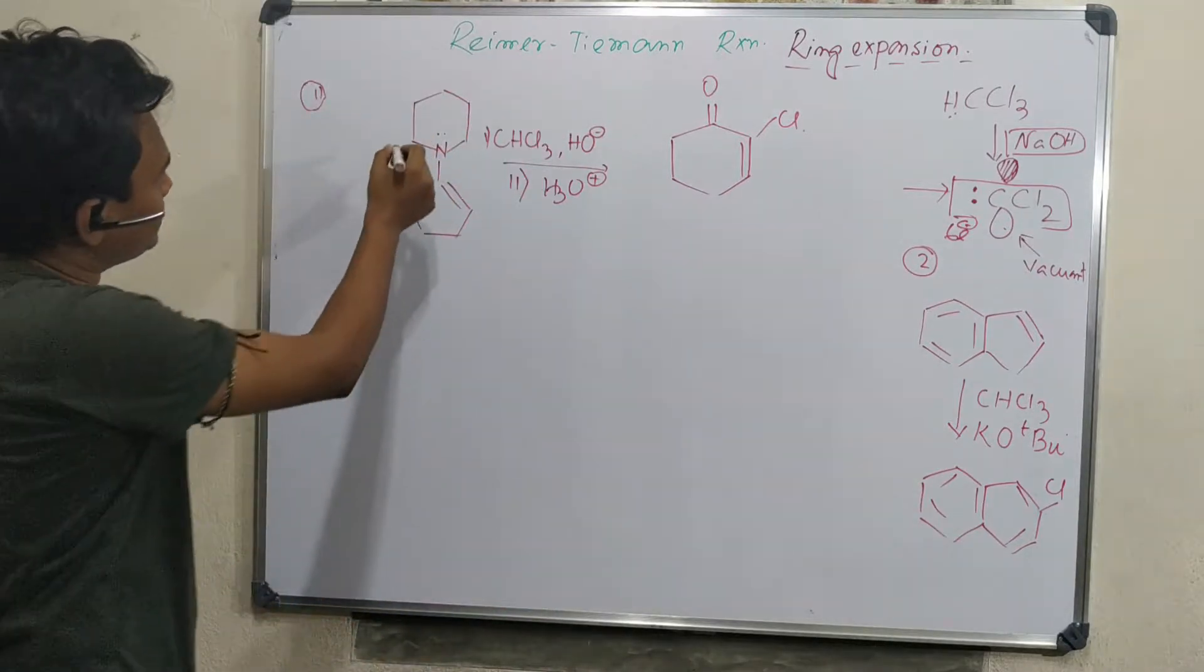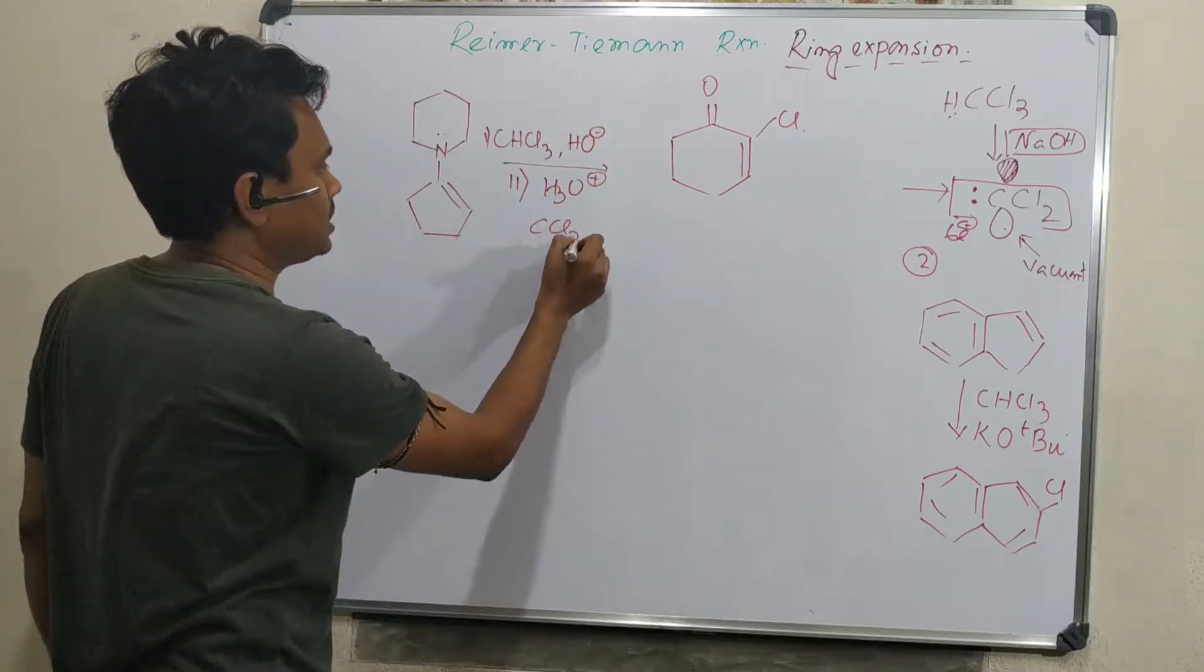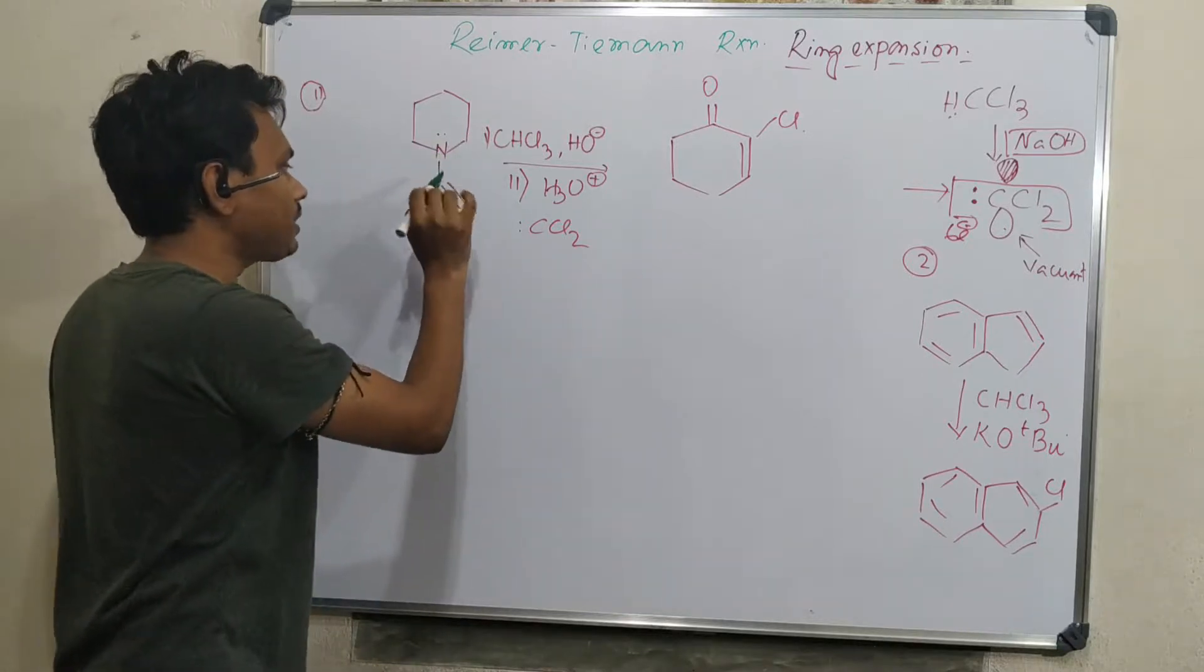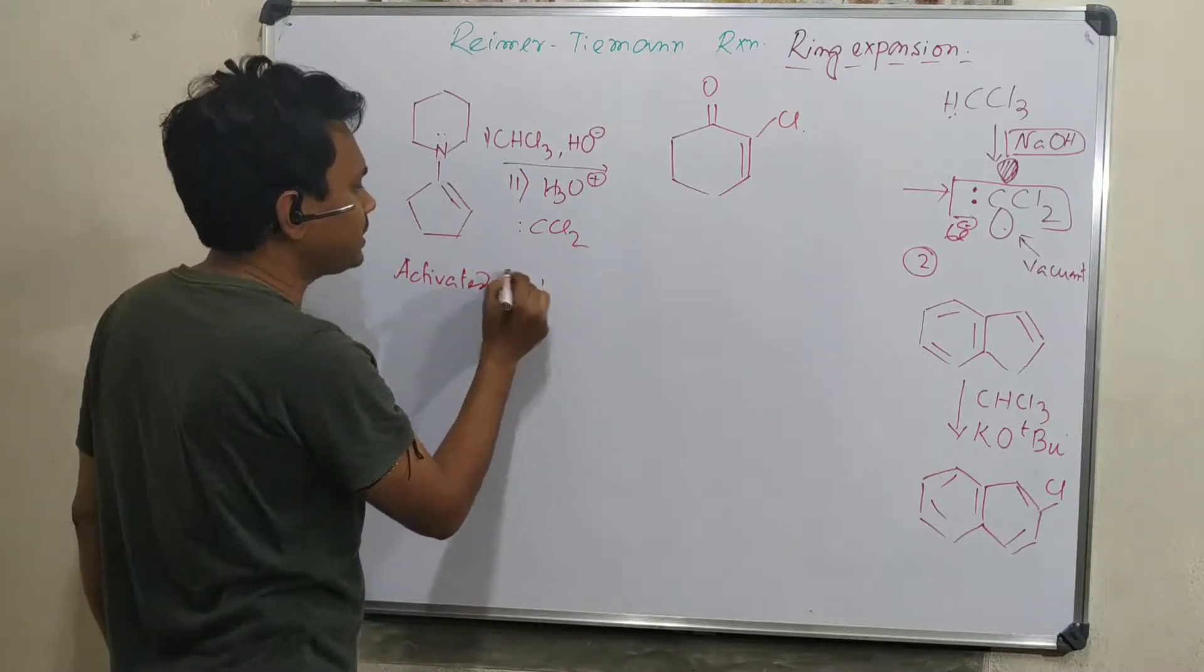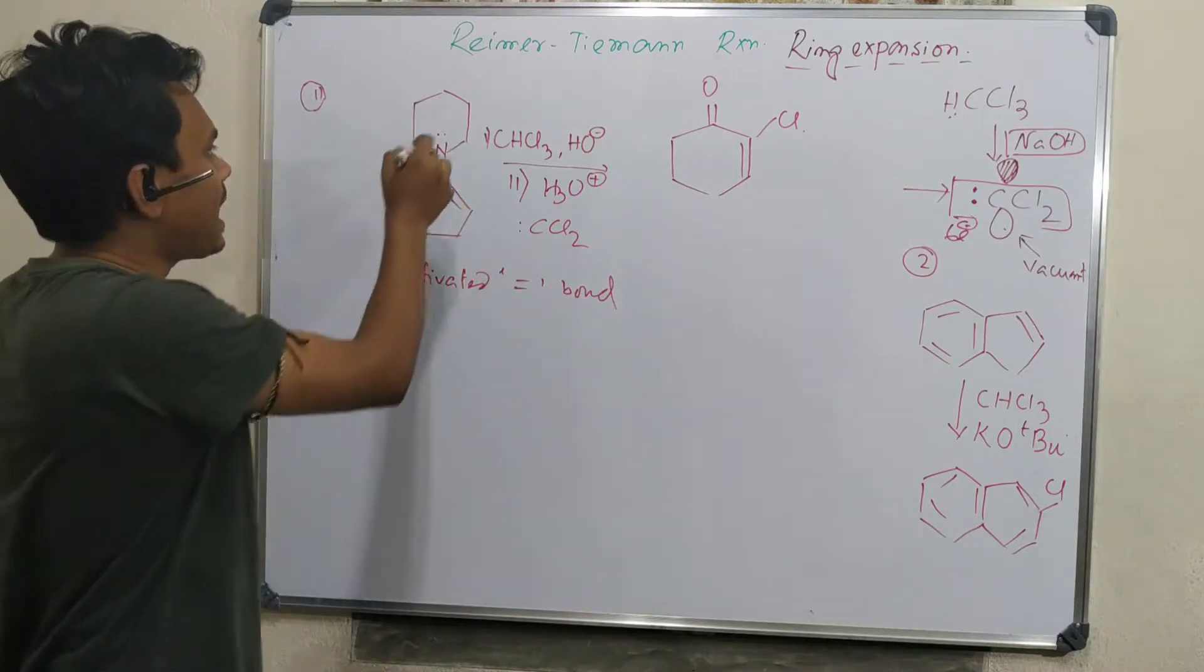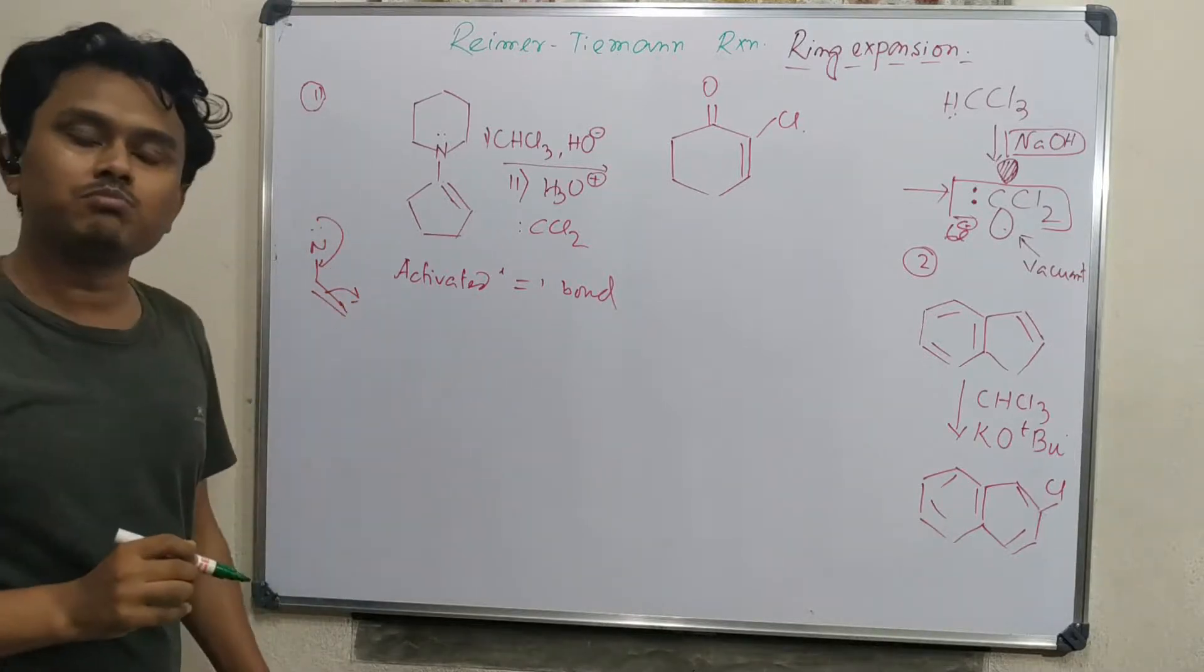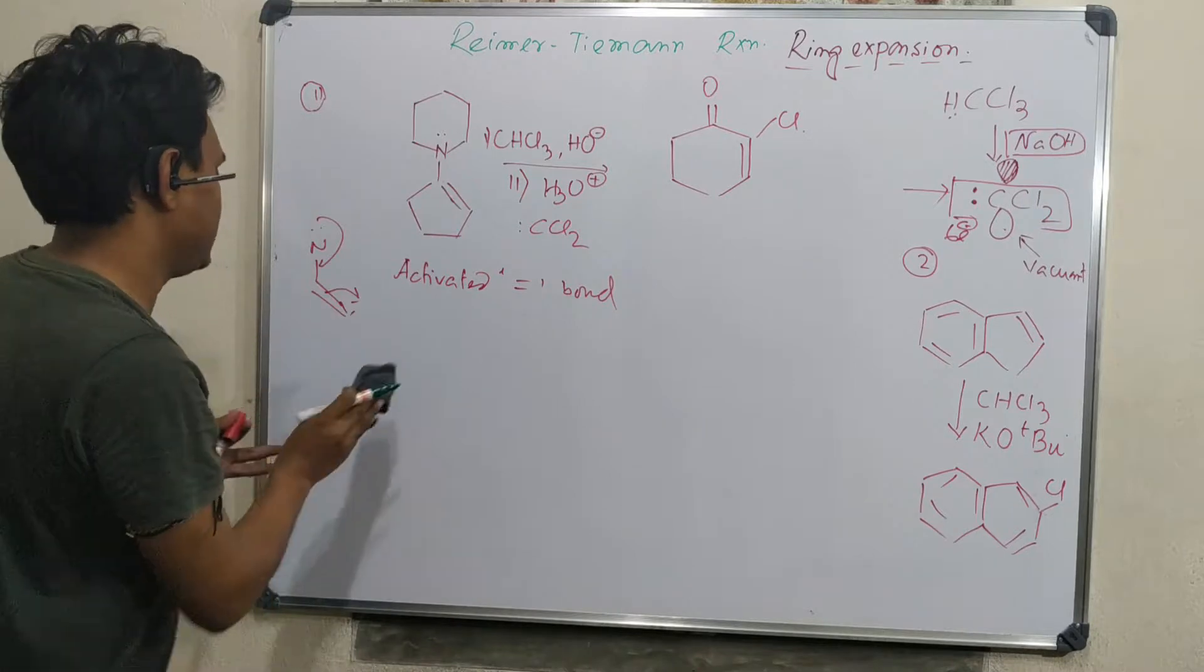Here you can see the first example. This condition produces CCl2. This is an enamine. This is an activated double bond. Why? Because this nitrogen is attached to this double bond through conjugation.